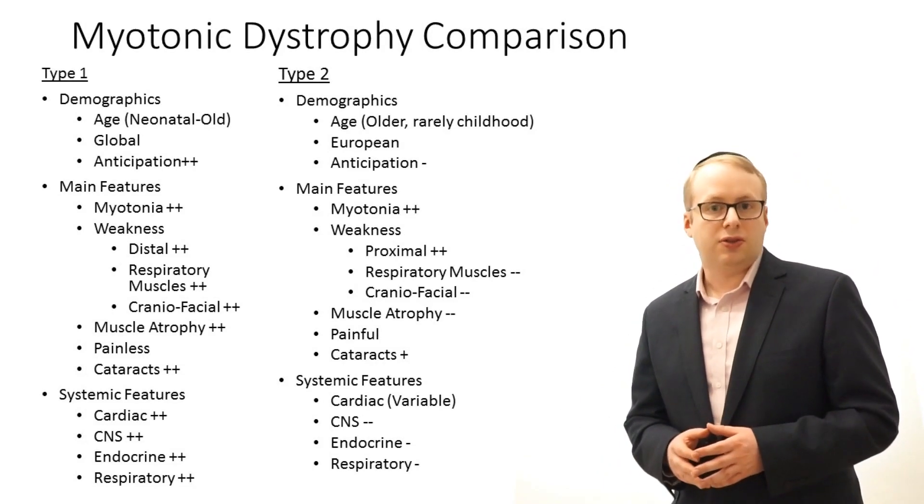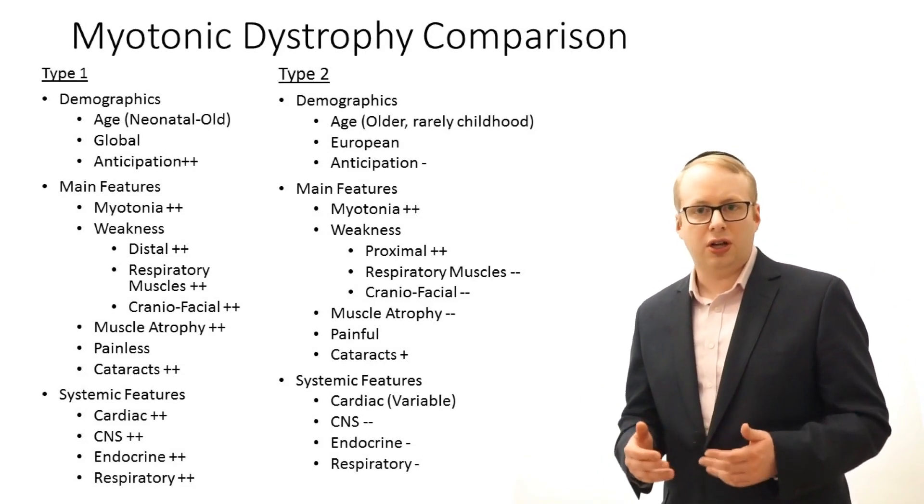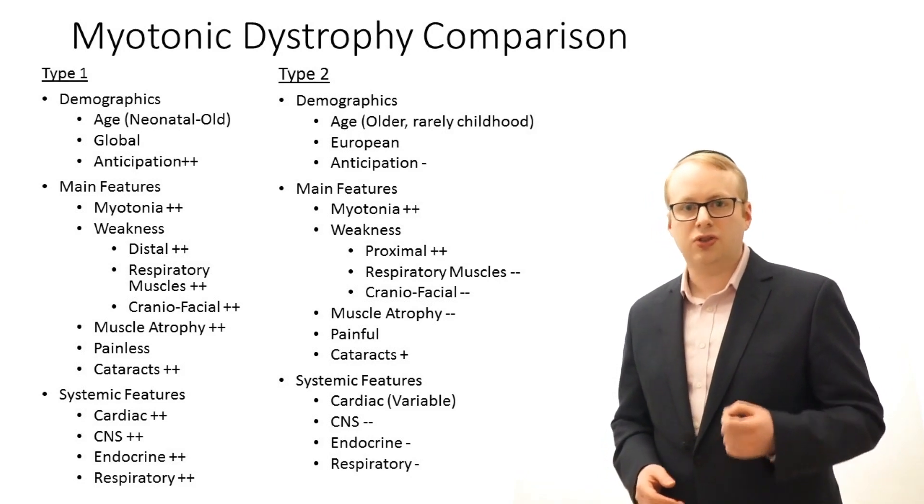Both type 1 and type 2 are inherited in an autosomal dominant way and are characterised by muscle weakness and clinical myotonia — an inability to relax the muscles after activation. Both are associated with more widespread or systemic features. But whilst they have some similarities believed to be driven by aberrant RNA splicing, they are in fact two very different conditions, as summarised in the slide coming up.